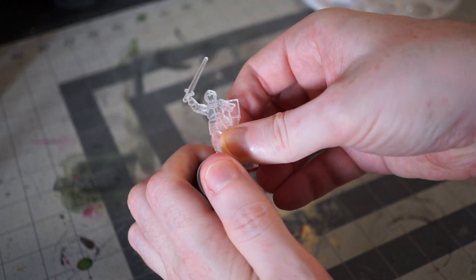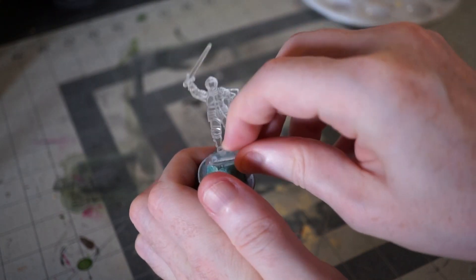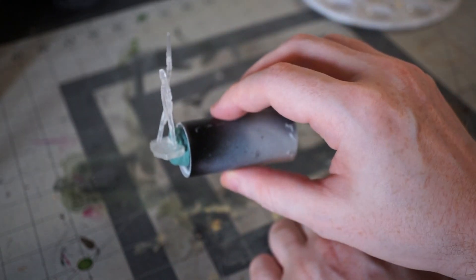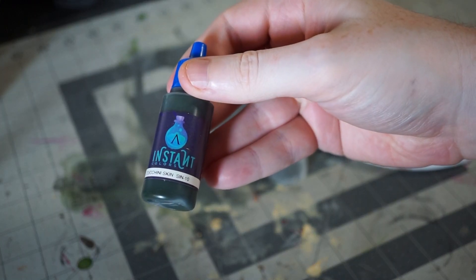To start with, I'm going to attach the model to my painting handle sideways. I'm not sure if it will help or not, but the idea is for the speed paints to pull evenly on the flat panels rather than running down.